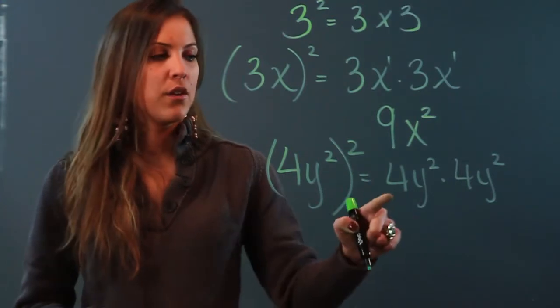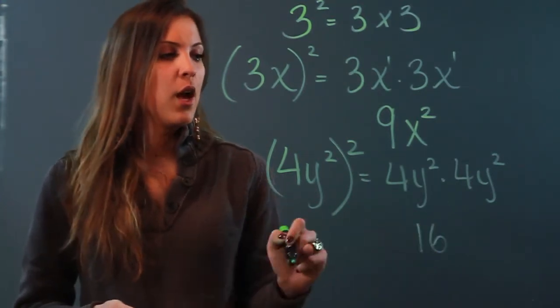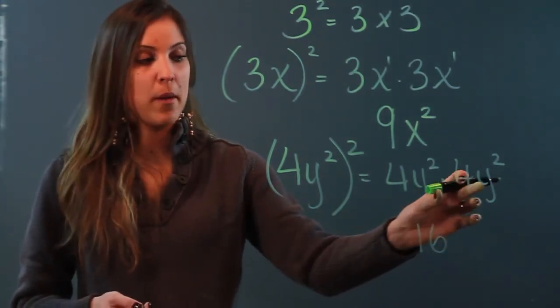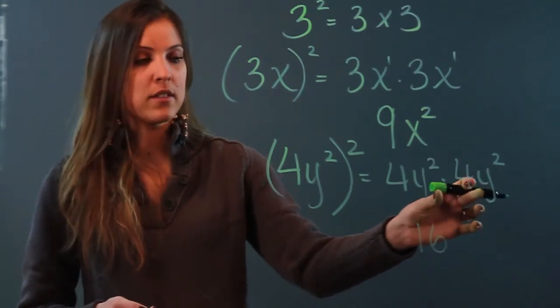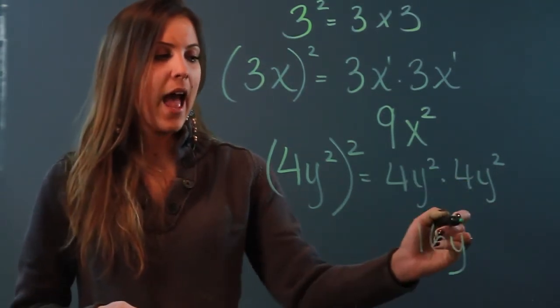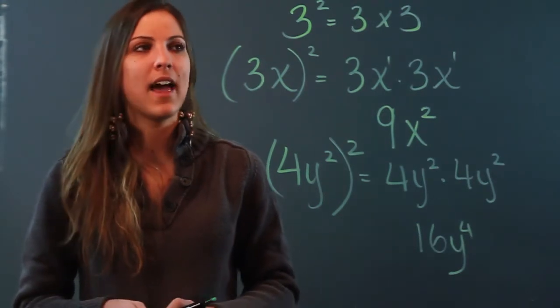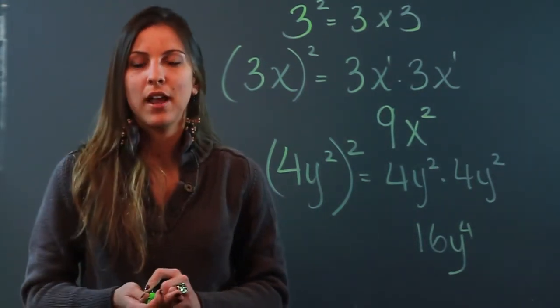Multiply the coefficients. 4 times 4 is 16. Multiply the variables and remember to use multiplication law of exponents. So same base, keep the base, add the exponents. That is what it means to square a monomial.